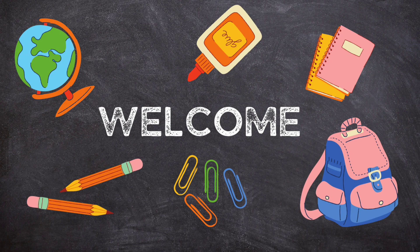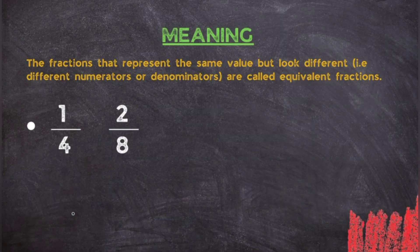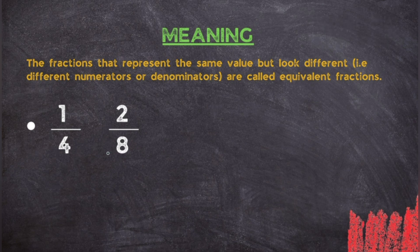Hello kids, welcome to the class. Today's topic will be equivalent fractions. The simple definition — the meaning of equivalent fractions — is fractions that represent the same value but look different, with different numerators or denominators. As you can see, there are two fractions that have different digits but are still equal. Today we will learn how to identify whether two given fractions are equivalent or not.